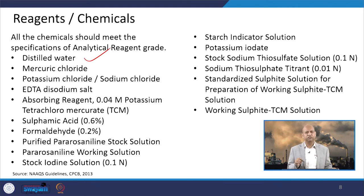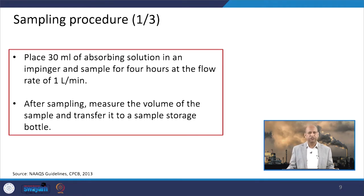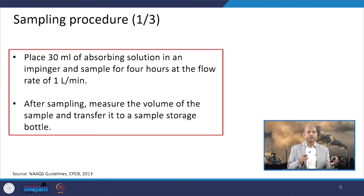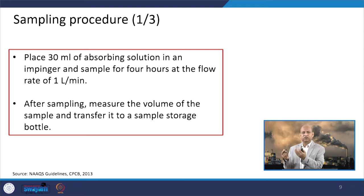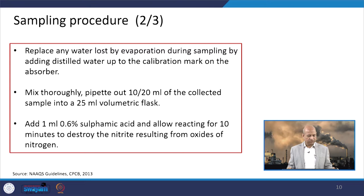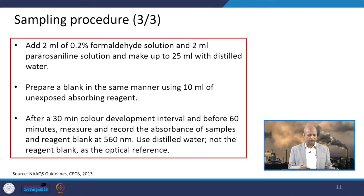For the sampling procedure, first of all we have to place 30 millilitres of the absorbing solution in the impinger, so that when air passes through the impinger the SO2 gets absorbed in the solution. We do follow a certain procedure which we will look at step by step.